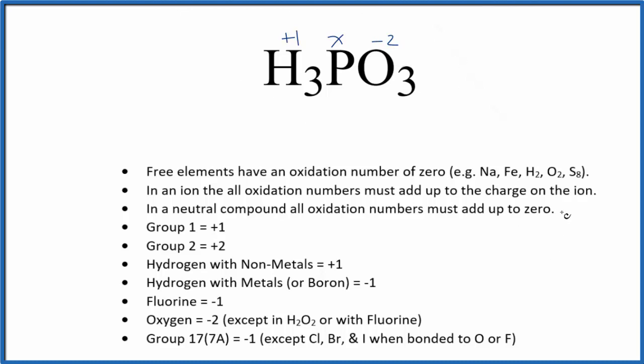So we know that all of this is going to equal zero, since it's a neutral compound. We could just say three times the one plus X minus two times three, since we have three of these oxygen atoms here, that gives us zero.